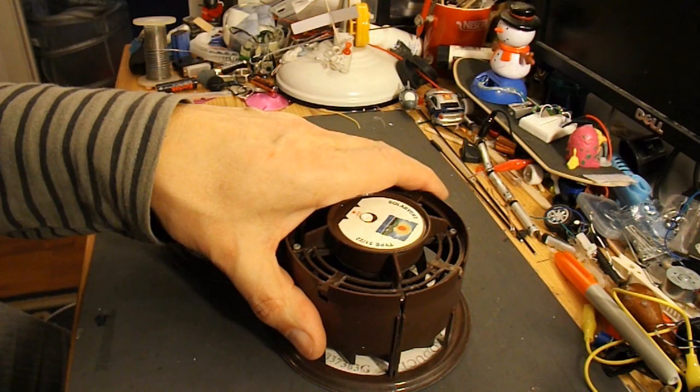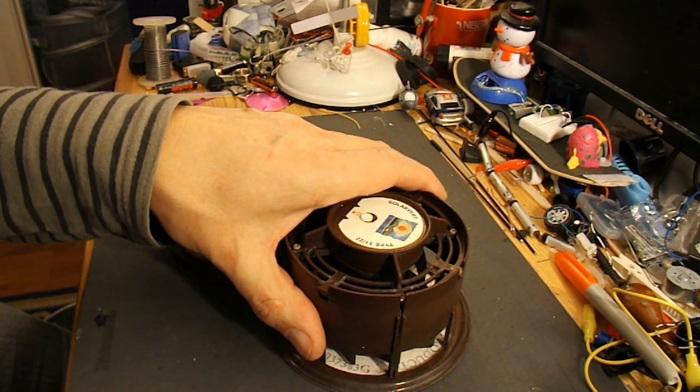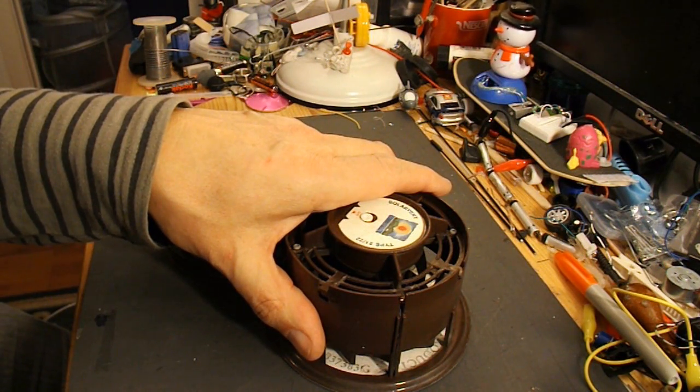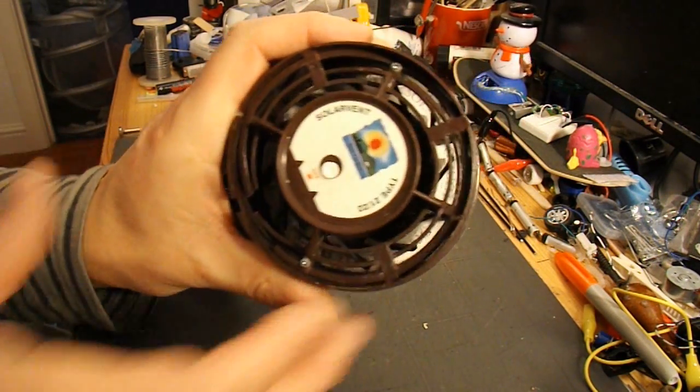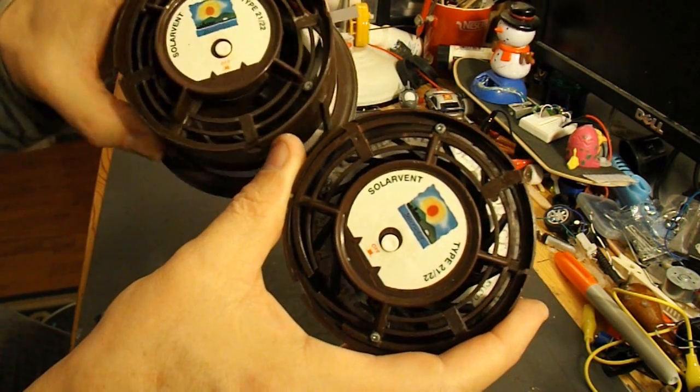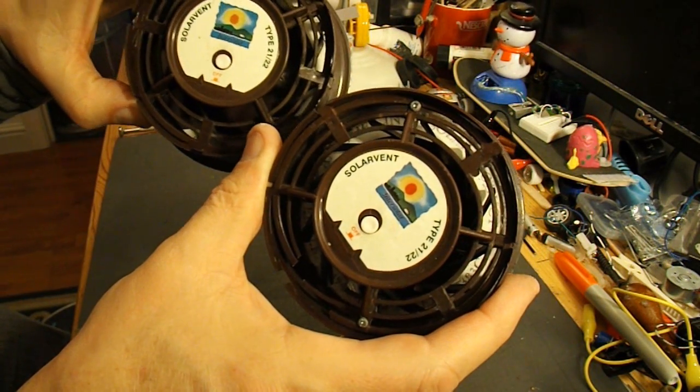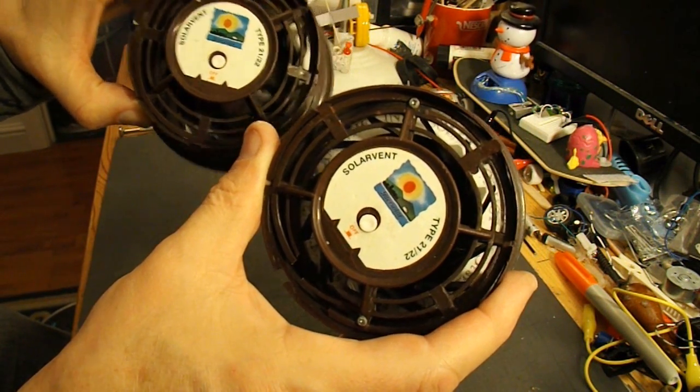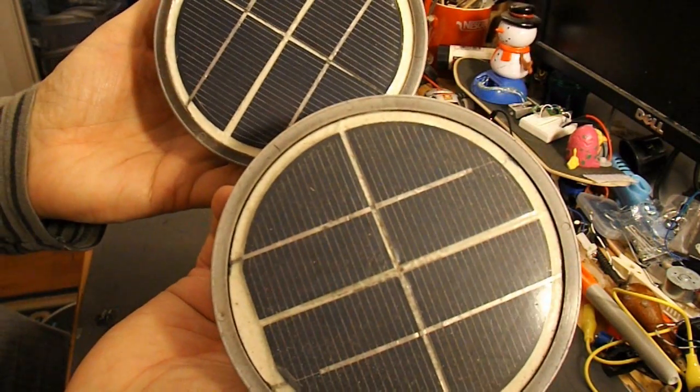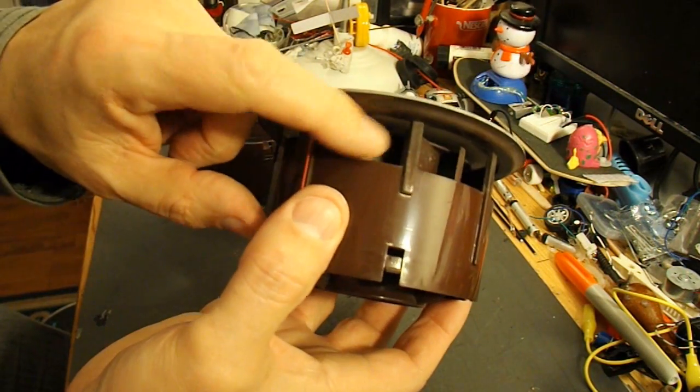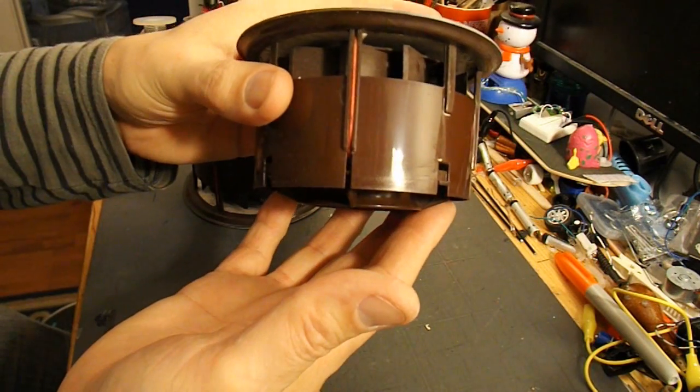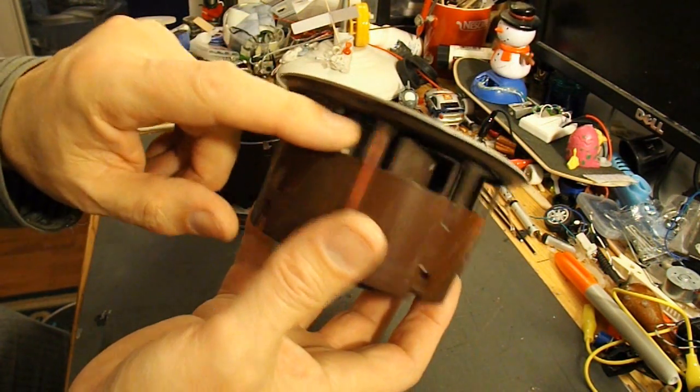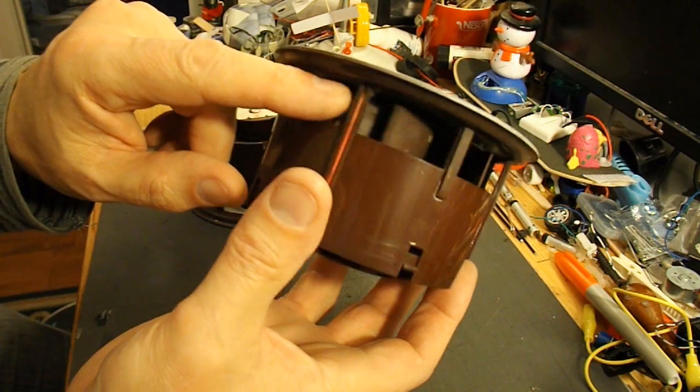You may know, or you may have seen the videos, that I've replaced my old conservatory with a new conservatory. The old conservatory had these solar vents in it, which when the sun shines, it powers the solar panels, which powers a little electric motor in there, which draws the hot air out of the conservatory and blows it out of a little hole in the top.